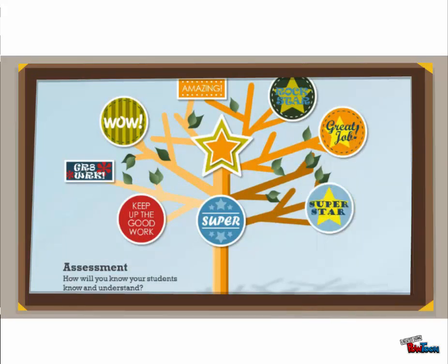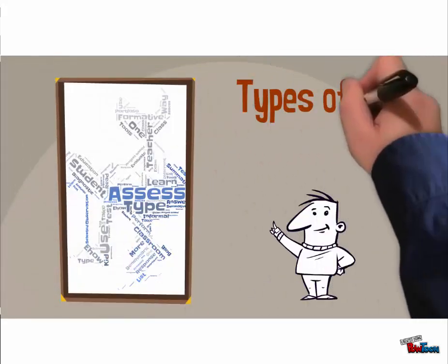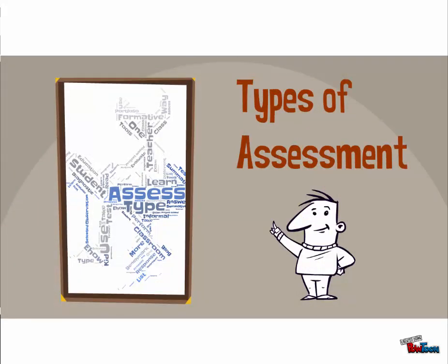The next stage of Understanding by Design is Determine Acceptable Evidence, otherwise known as developing assessments. How will you know that your students know and understand what was covered during the session? There are many kinds of assessment. For this presentation, we'll look at three types. Diagnostic assessment is given before a session takes place — it provides the teacher with a clear indication of what students know and helps plan instructional activities that start from the students' current level of competency.